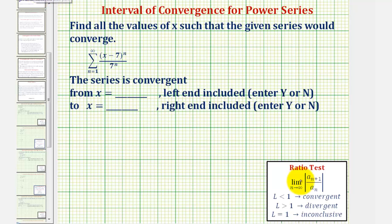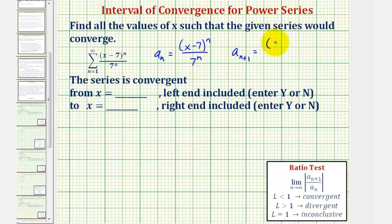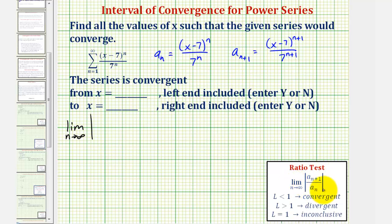Before we apply the ratio test, notice that a sub n is equal to the quantity x minus seven raised to the nth, divided by seven to the nth. And therefore a sub n plus one would be equal to the quantity x minus seven to the power of n plus one, divided by seven to the power of n plus one. So now we'll apply the ratio test, which gives us the limit as n approaches infinity of the absolute value of a sub n plus one divided by a sub n.